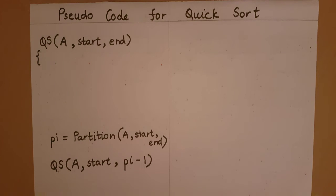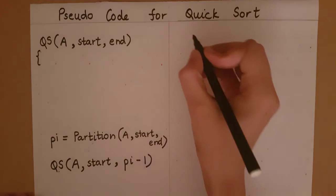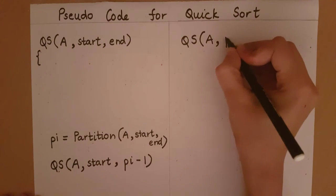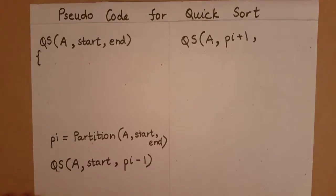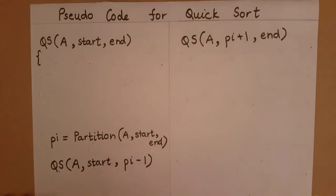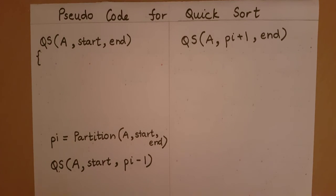Once the quicksort is applied to the left subarray and that line of code has finished, the left subarray can be said to be sorted. Then we apply quicksort to the right subarray, which also exists in the array itself. Its start index will be one more than the pivot index and its end index will be 'end'. Once the left subarray and the right subarray are both sorted, the entire array has been sorted.